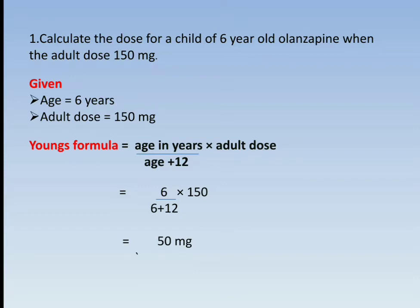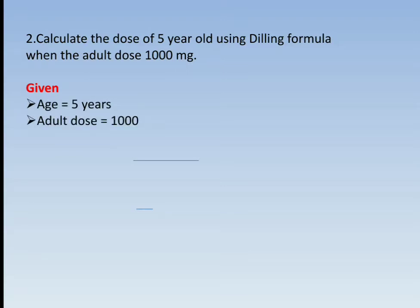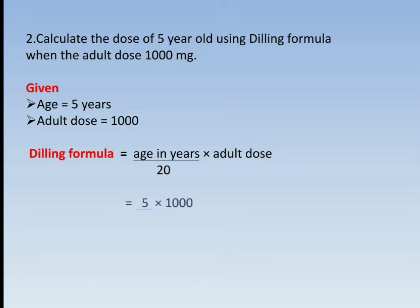Next question: Calculate the dose of a 5-year-old using Dilling's formula when the adult dose is 1000 mg. Given: Age = 5 years, Adult dose = 1000 mg. Dilling's formula: Child dose = (Age in years × Adult dose) / 20 = (5 × 1000) / 20 = 250 mg.